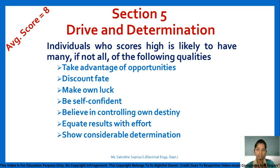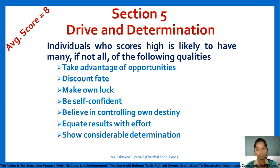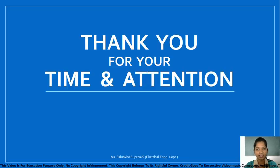Section 5 is related to drive and determination. An individual who scores high is likely to take advantage of opportunities, discount fate, make their own luck, be self-confident, believe in controlling their own destiny, equate results with effort, and show considerable determination. After calculating your total score for each section, you will find out what traits you possess for being an entrepreneur. Thank you.